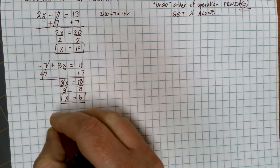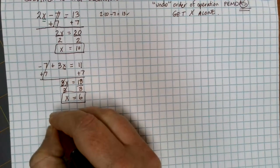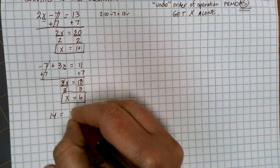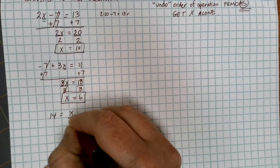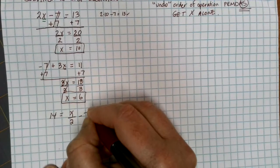Let's see, what about something like this? Let's suppose that we have 14 is equal to x divided by 2 minus 7.